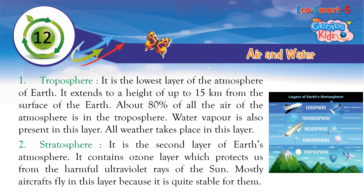Stratosphere: It is the second layer of earth's atmosphere. It contains the ozone layer, which protects us from the harmful ultraviolet rays of the sun. Mostly, aircraft fly in this layer because it is quite stable for them.